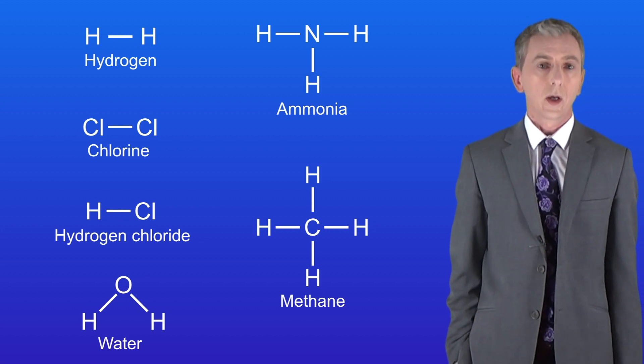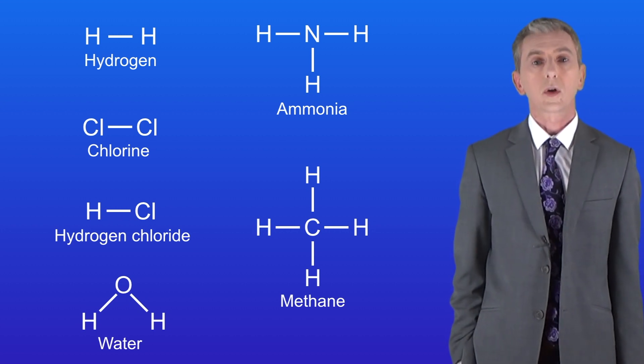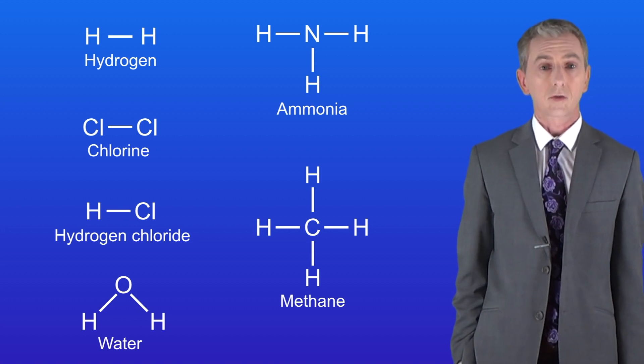In this video we're going to look at two final small covalent molecules. These are oxygen and nitrogen. So let's start by looking at the covalent bonding in an oxygen molecule. This has the formula O2. So in this molecule we've got two oxygen atoms bonded together.